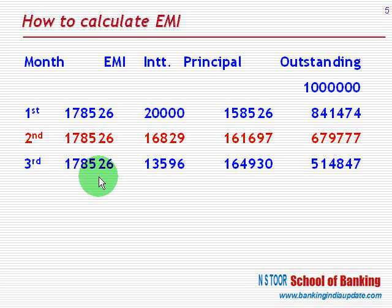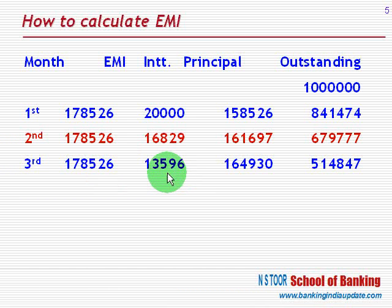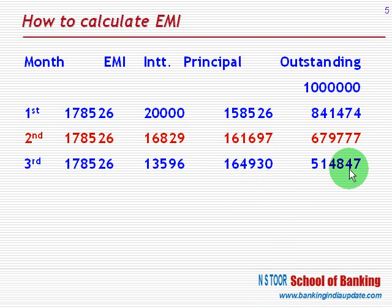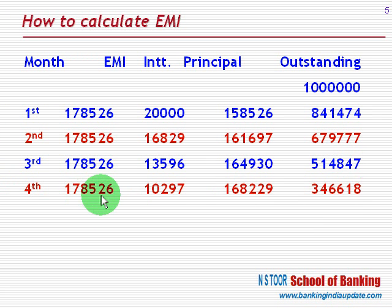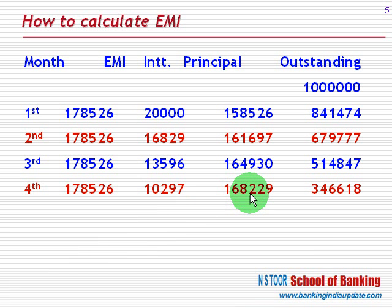At the end of the third month, this is the amount of installment. On this amount at 2%, this is the amount of interest. Out of this, this amount is appropriated as interest and the remaining portion goes to repayment of principal, giving the balance for next month. For the fourth month, on the outstanding balance at 2%, this is the rate of interest. The amount used for interest payment and the balance amount used for repayment of principal gives a remaining balance of Rs 3,46,618.